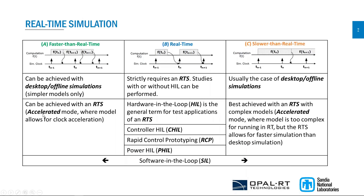Before going into power hardware-in-the-loop, we need to understand what real-time simulation is. For a real-time simulation to be valid, the simulator must accurately produce the outputs of the simulation within the same length of time that its physical counterpart or the real-world system would require. The time needed to compute the solution at a given time step must be shorter than the wall clock duration of that time step, as shown in this figure. This permits the real-time simulation to perform all necessary operations, including driving the IOs needed for hardware-in-the-loop.